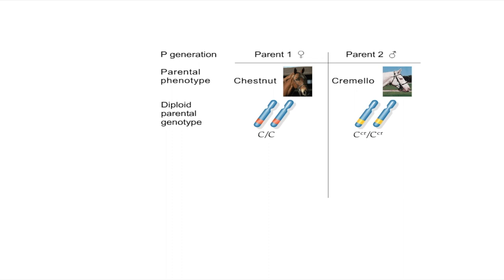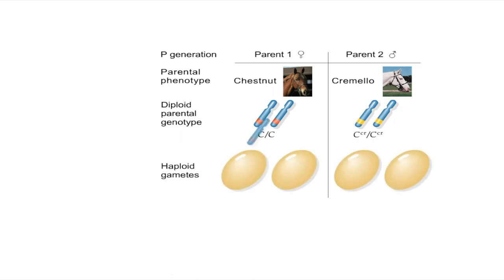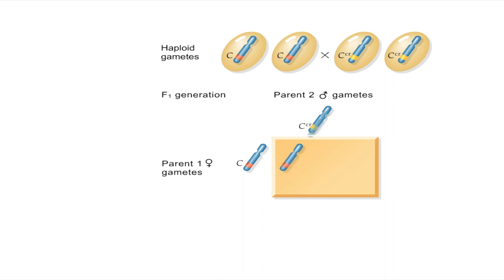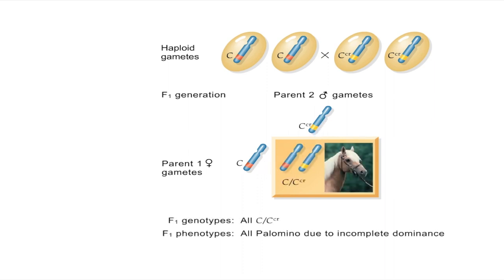The explanation for these different coat colors involves two alleles, C and C-CR. A chestnut horse is homozygous for the C allele. A cremello horse is homozygous for the C-CR allele. A cross between a chestnut and cremello produces all heterozygous offspring, which are palomino in color, C C-CR. The gene symbols used here do not imply dominance or recessiveness; neither allele is dominant or recessive to the other.